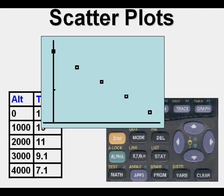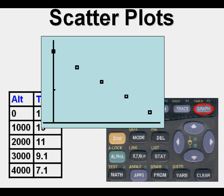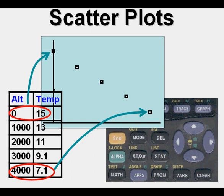If we go to our window view, we can check the numbers that our calculator determined based on the data that are optimal for being able to see these points. Going back to graph, we can see our y-intercept at 0, 15, and we can see this point here at 4000, 7.1.